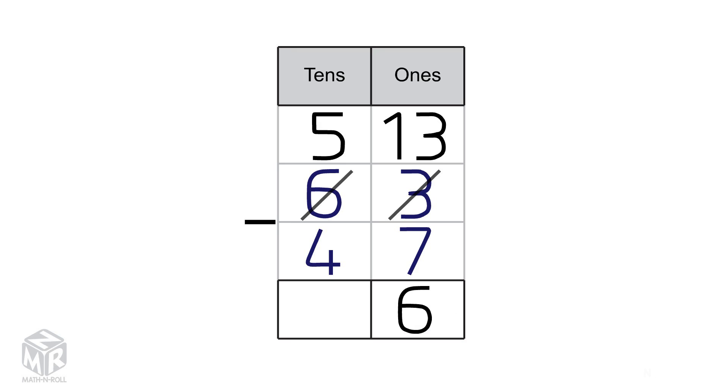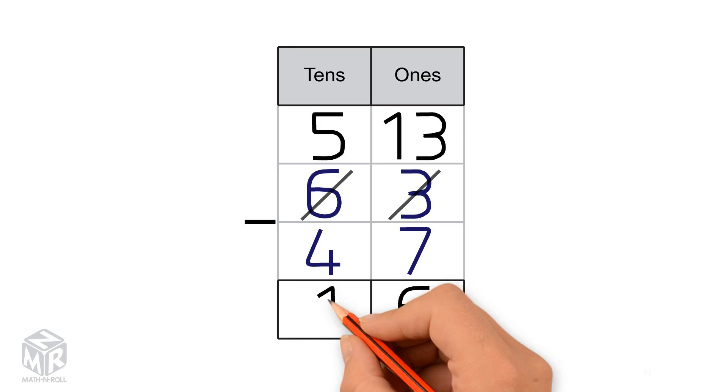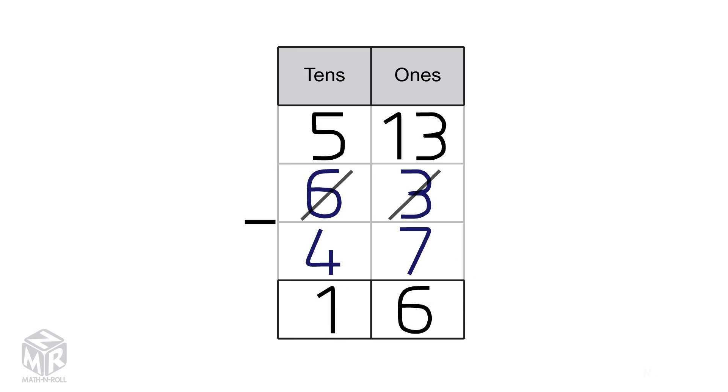Subtract the 10s: 5 minus 4 equals 1. So 63 minus 47 equals 16.